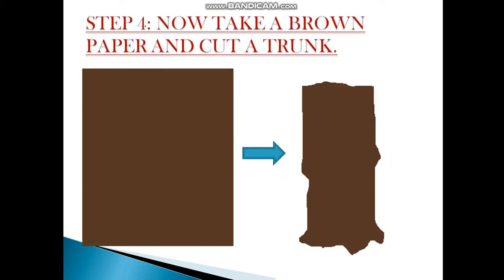Step 4: Now take a brown paper and cut a trunk. You have a corner of brown paper and this trunk is cut. You have to cut the trunk.